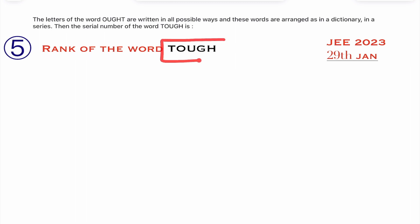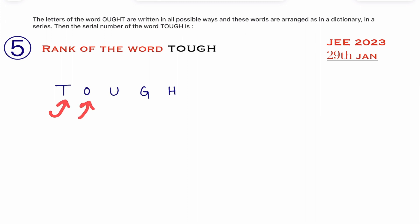To calculate the rank of a word we have one particular procedure, but we do this problem with the help of a shortcut. First, write all the letters of the word TOUGH. Now number these letters as per alphabetical order. G comes first so give it number 1, then H is 2, O is 3, T is 4, and U is 5.